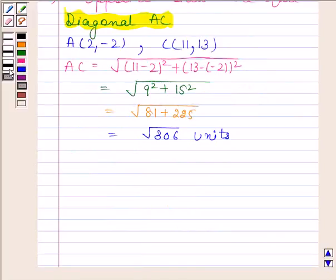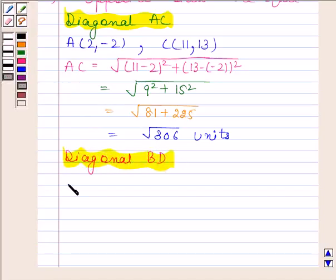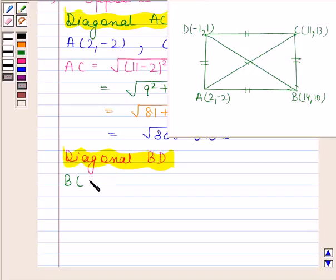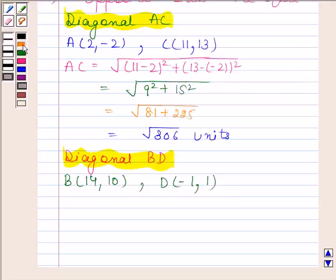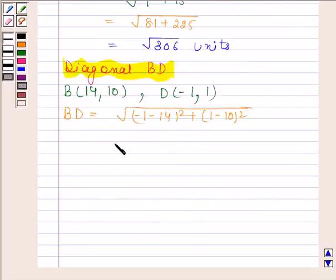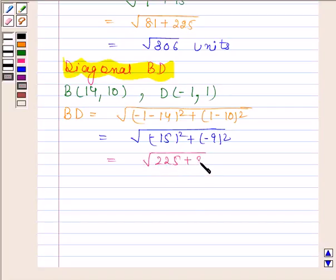Now we will find the length of diagonal BD. Coordinates of B are (14, 10) and coordinates of D are (-1, 1). BD is equal to square root of (-1 minus 14) whole square plus (1 minus 10) whole square. This is equal to square root of (-15) whole square plus (-9) whole square, which equals square root of 225 plus 81, which equals square root of 306 units. So the length of diagonal BD is square root of 306 units.